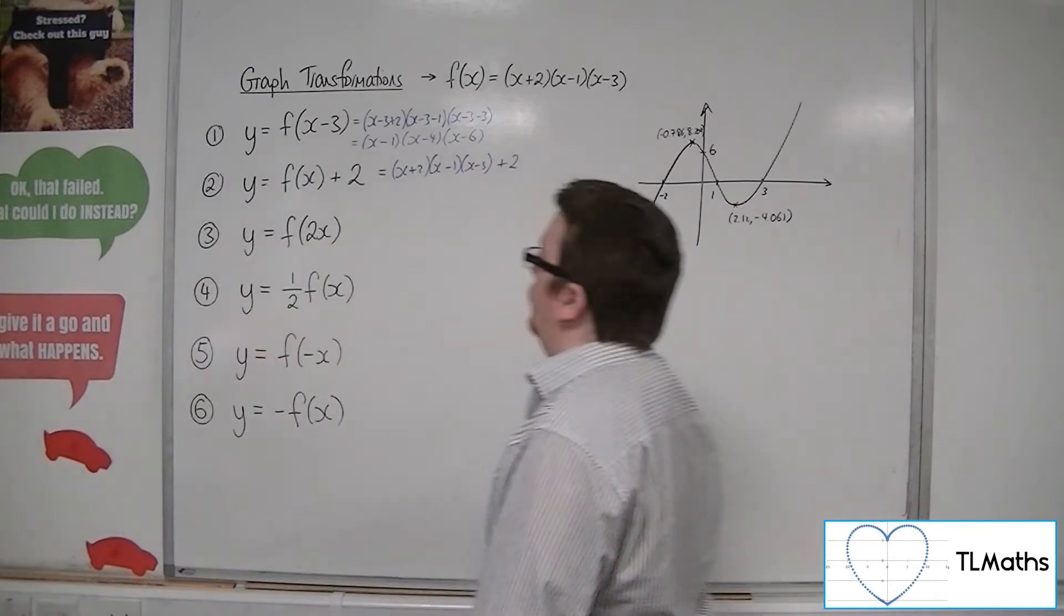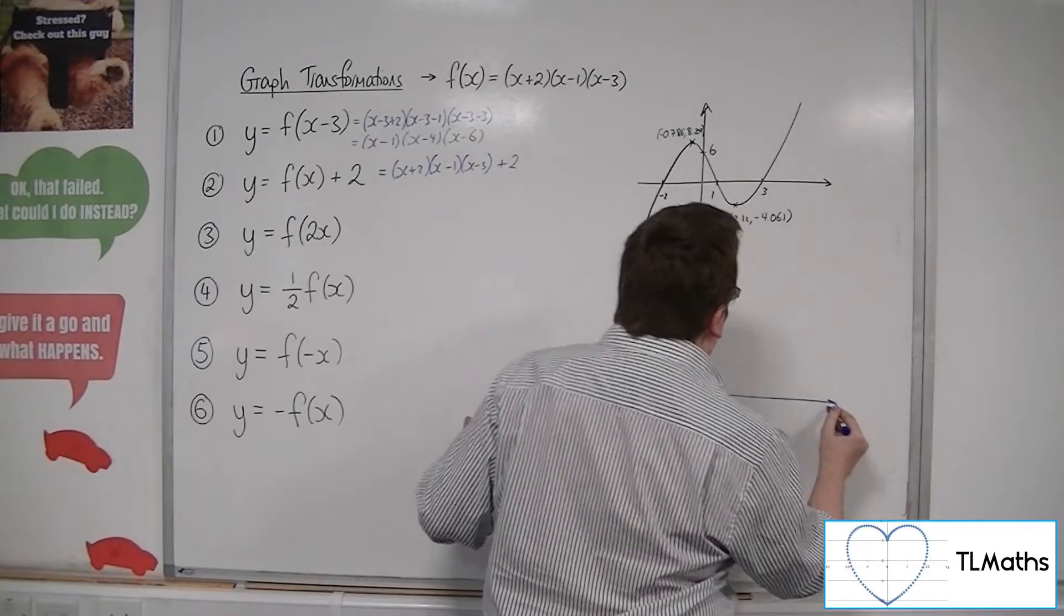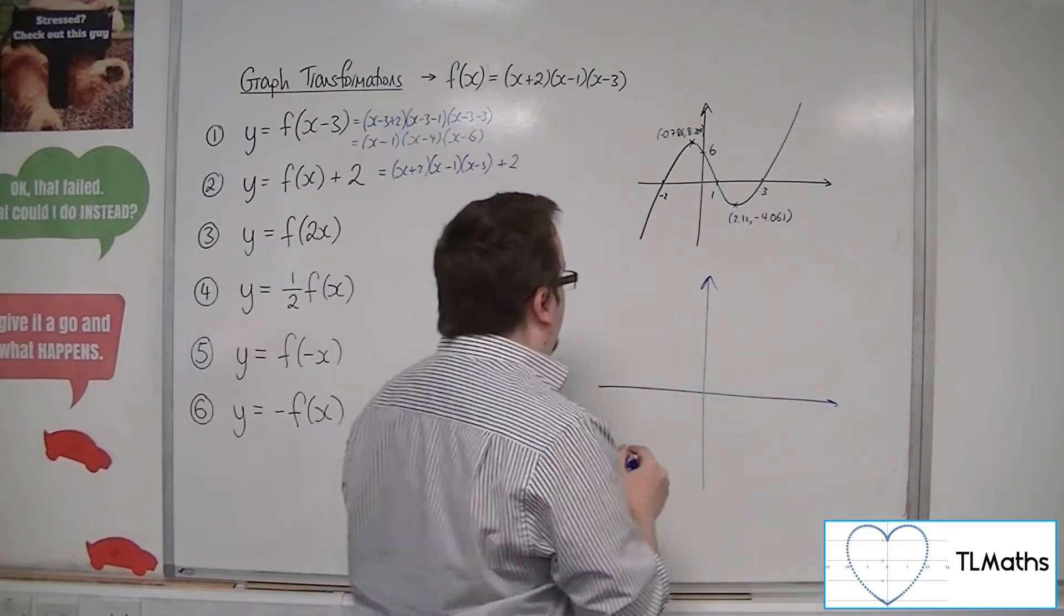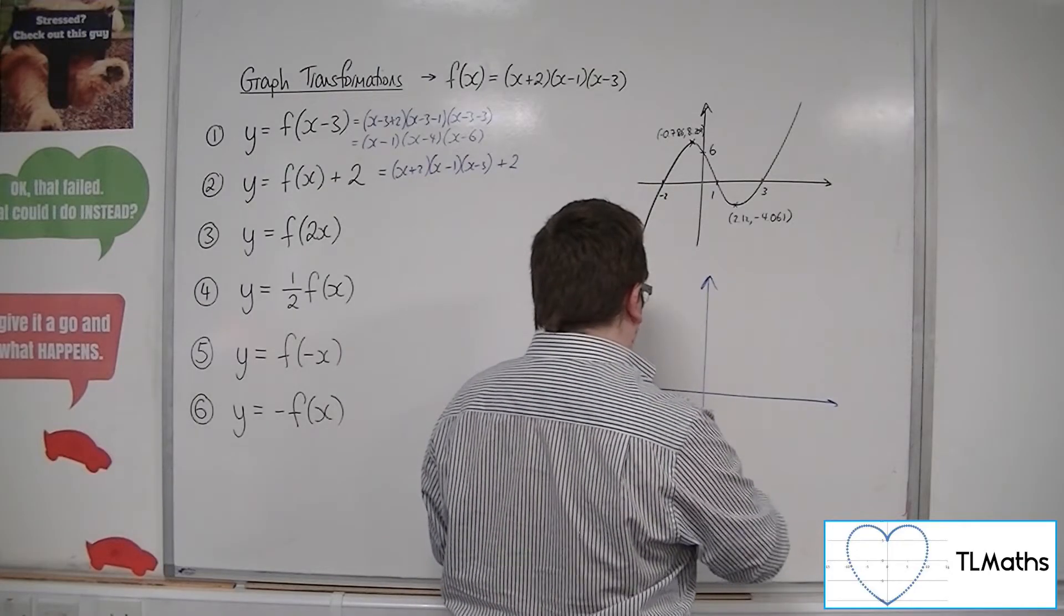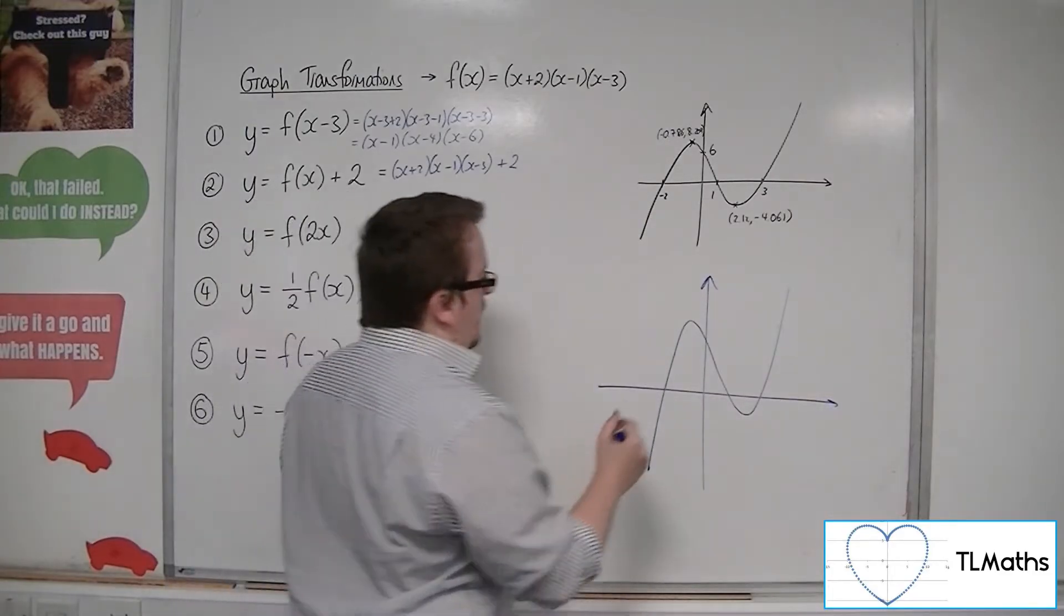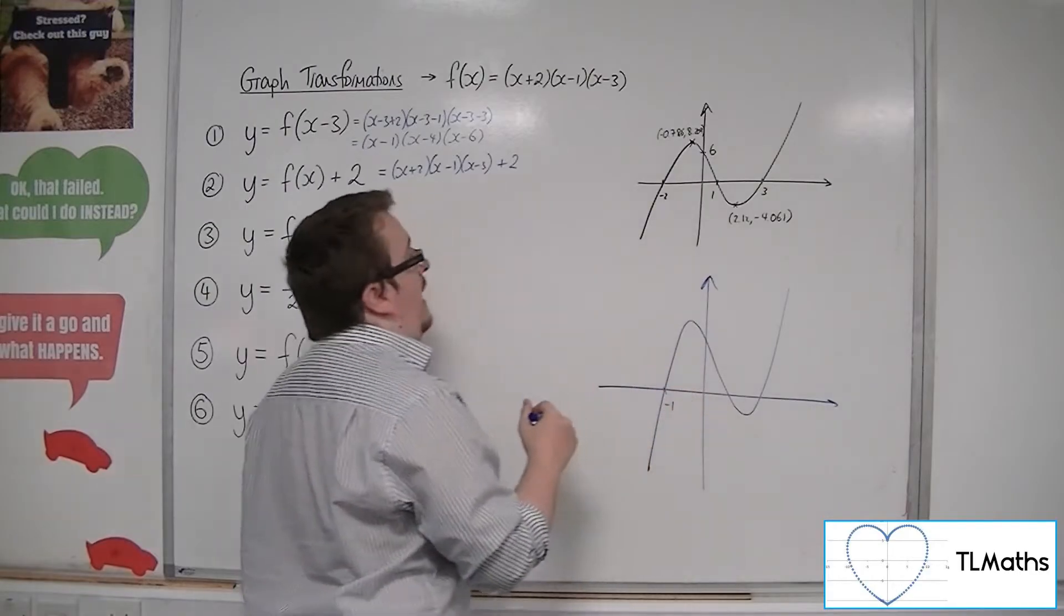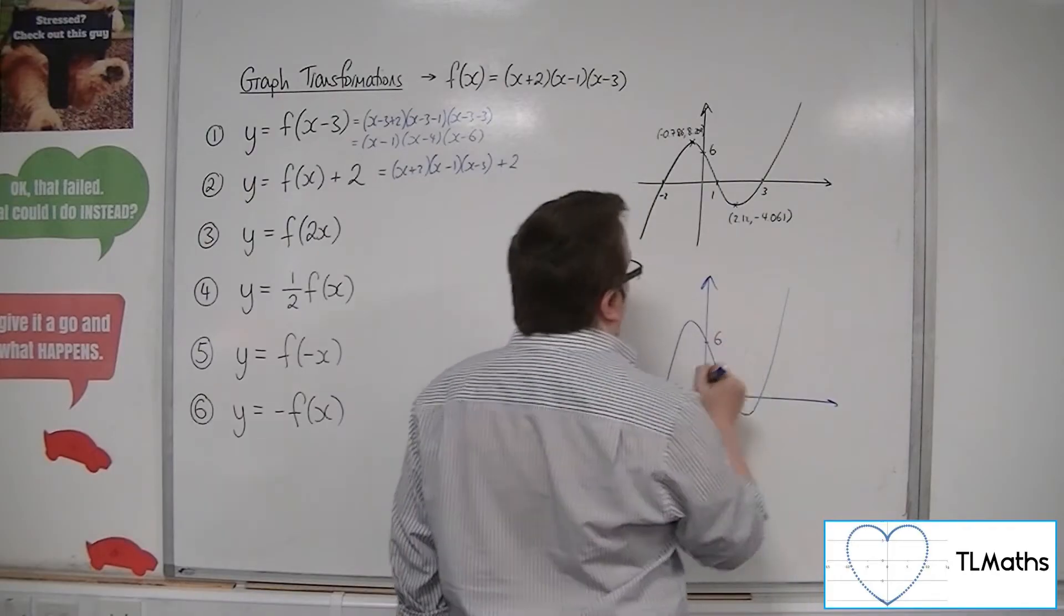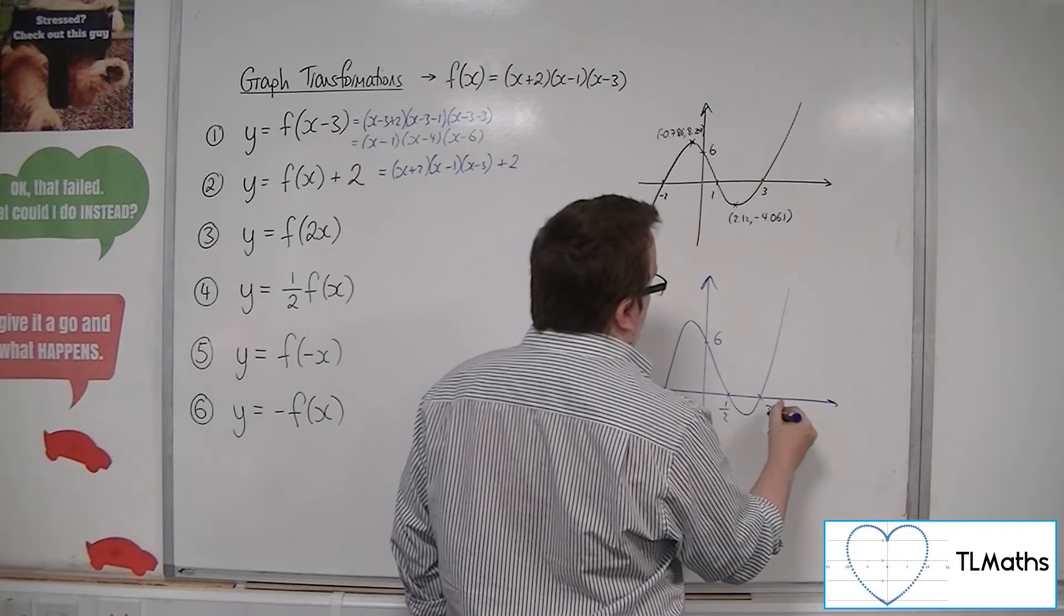How about y = f(2x)? Well, that's a stretch parallel to the x-axis factor of a half. So, what we're going to get is a curve that is narrower. It will be going through -1, because that x-coordinate will have halved. This y-coordinate, 6, will not have changed. This one will be a half, and this one will be 3 halves.